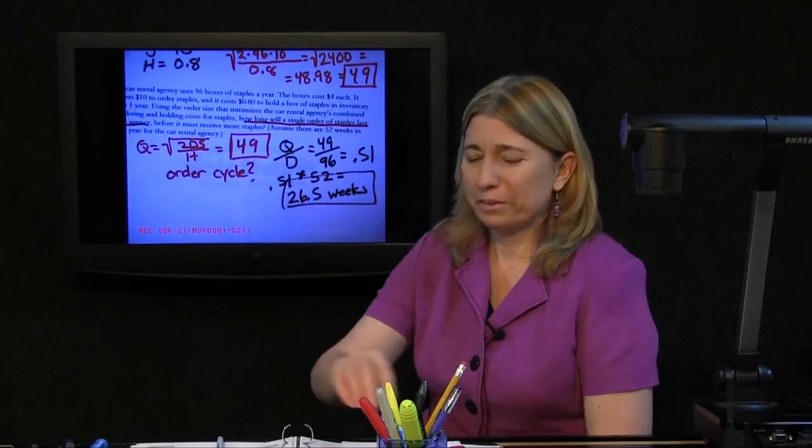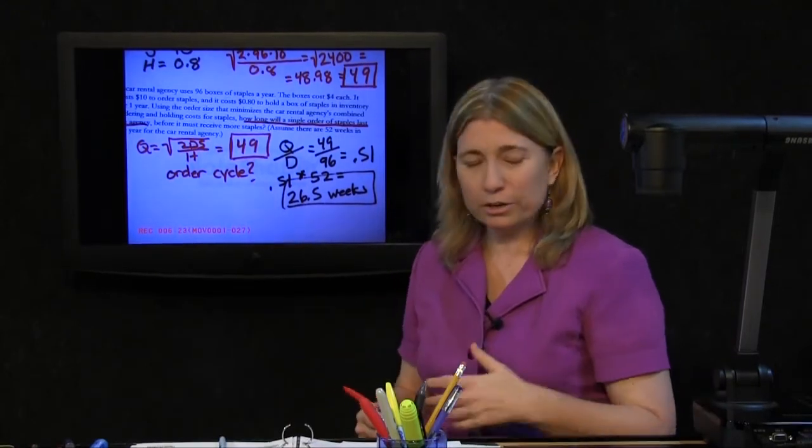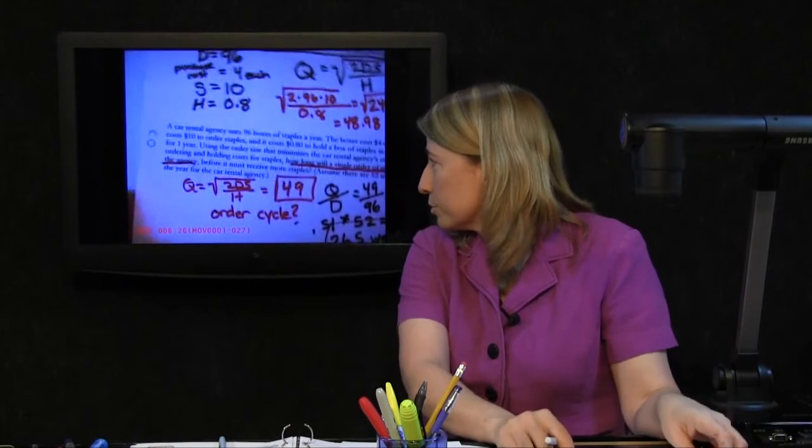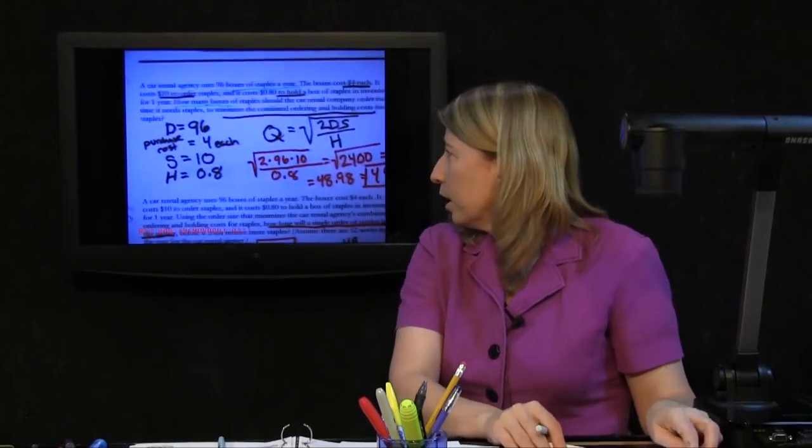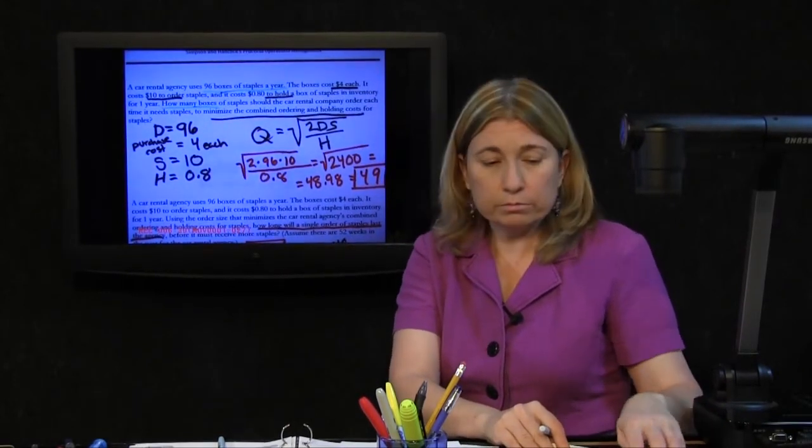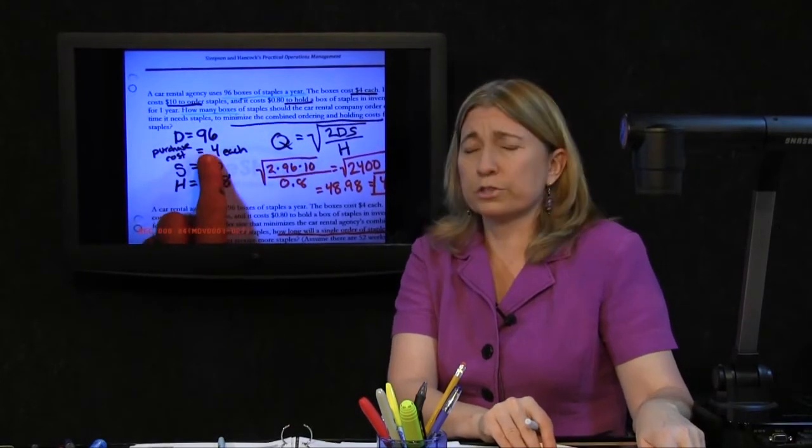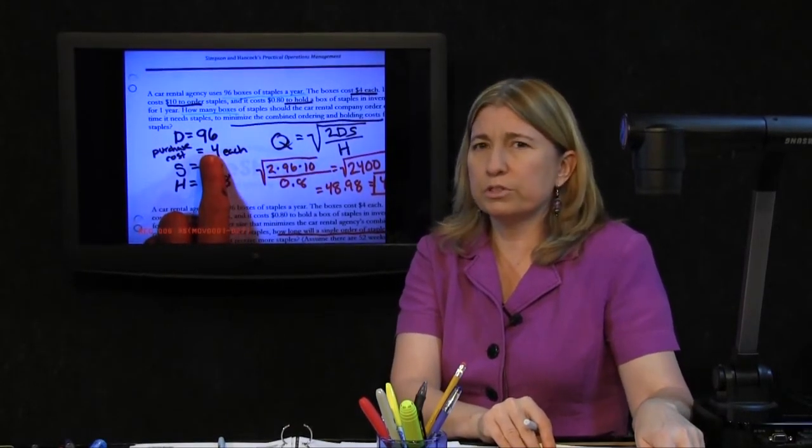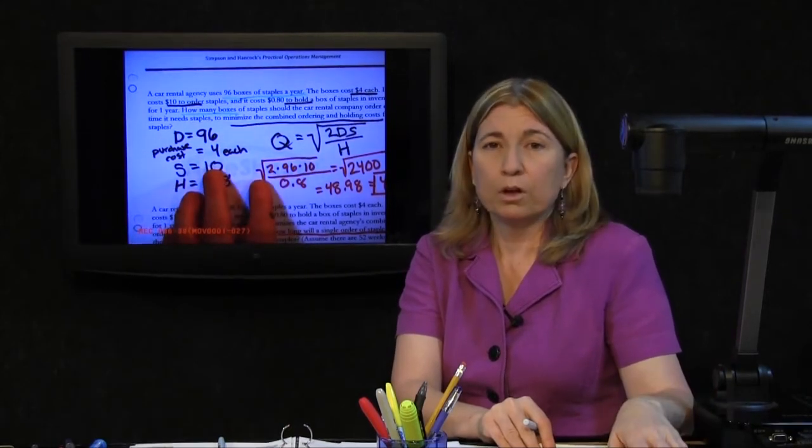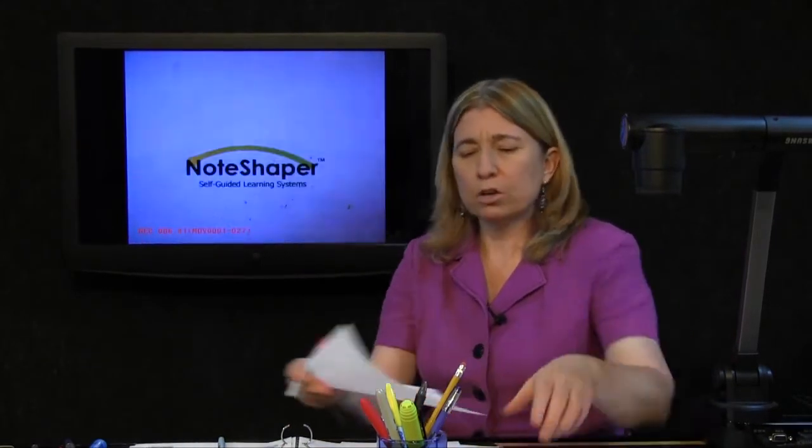There's kind of an irony here. Both in this question, which is about the order cycle, and in the question before it, which was about the economic order quantity, we never did use the purchase cost. You don't always use all information that you have available.